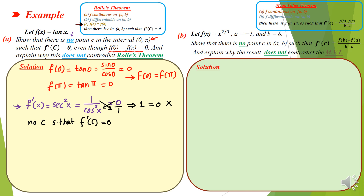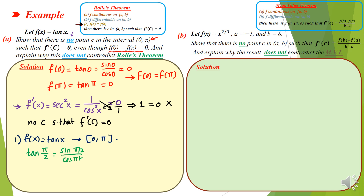Now we check the continuity of f(x) = tan(x) on the interval from 0 to π. Evaluating at π/2: tan(π/2) = sin(π/2)/cos(π/2) = 1/0, which is undefined.